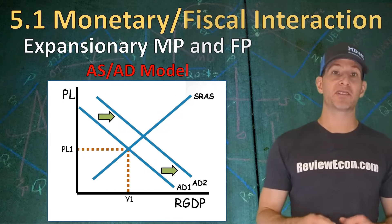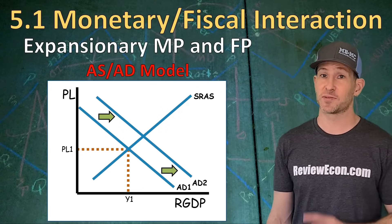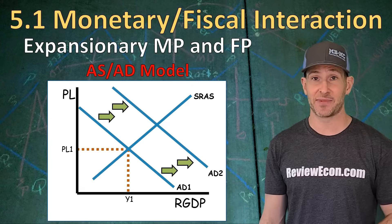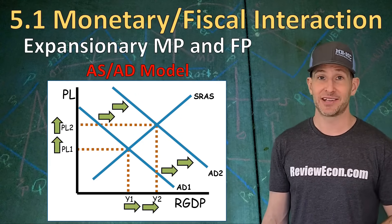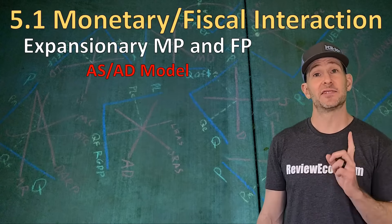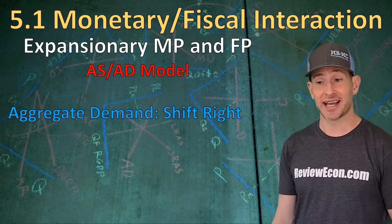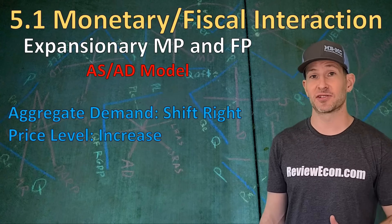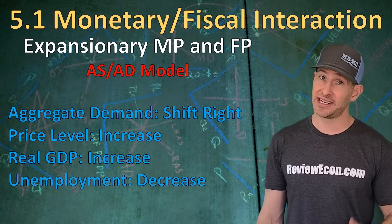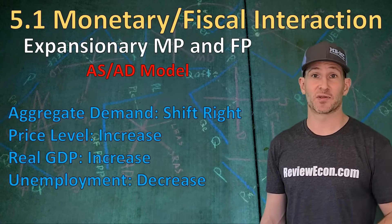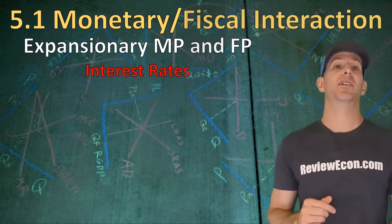If we have expansionary monetary policy, that means lower interest rates, which increases gross investment. That increase in gross investment will also shift that aggregate demand curve to the right, pushing the price level up again and increasing real output again. Since both actions shift the aggregate demand curve to the right, we know that the aggregate demand curve will definitely shift to the right. That means the price level is going to increase, real GDP output is also going to increase, and the unemployment rate will decrease as a result, because there's an inverse relationship between real GDP and unemployment.